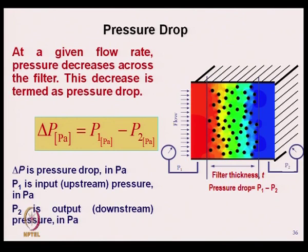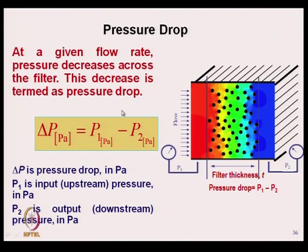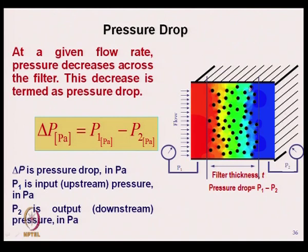Another important parameter for filtration is pressure drop. At a given flow rate, the pressure decreases across the filter; this decrease is termed pressure drop. When particles along with the liquid medium flow across the filter medium, the upstream side has very high pressure and the downstream side has lower pressure.